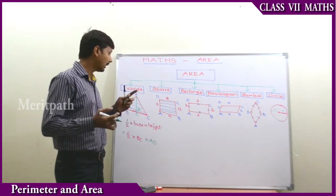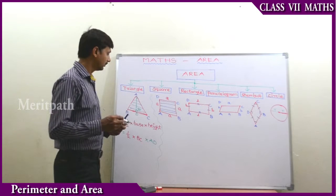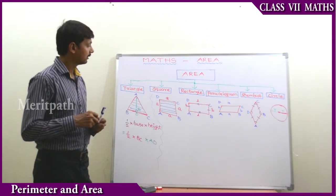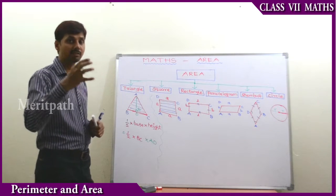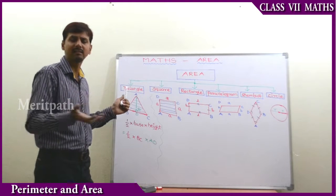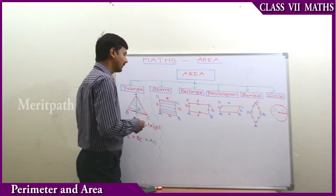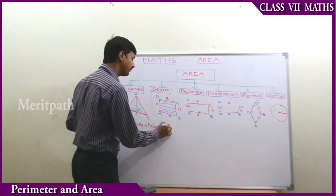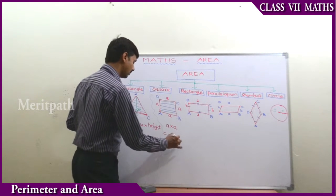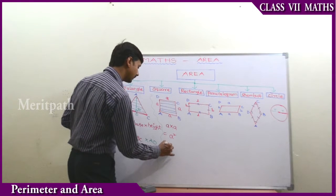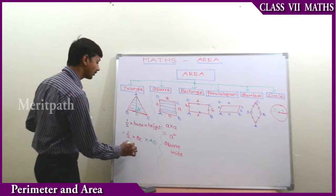Let's go to the next one — area of a square. The area of a square is the product of side into side. All the sides of a square are equal, so we multiply side by side: a times a, which is a squared. The unit is square units. So the area of a square is a squared, and we express it in square units.